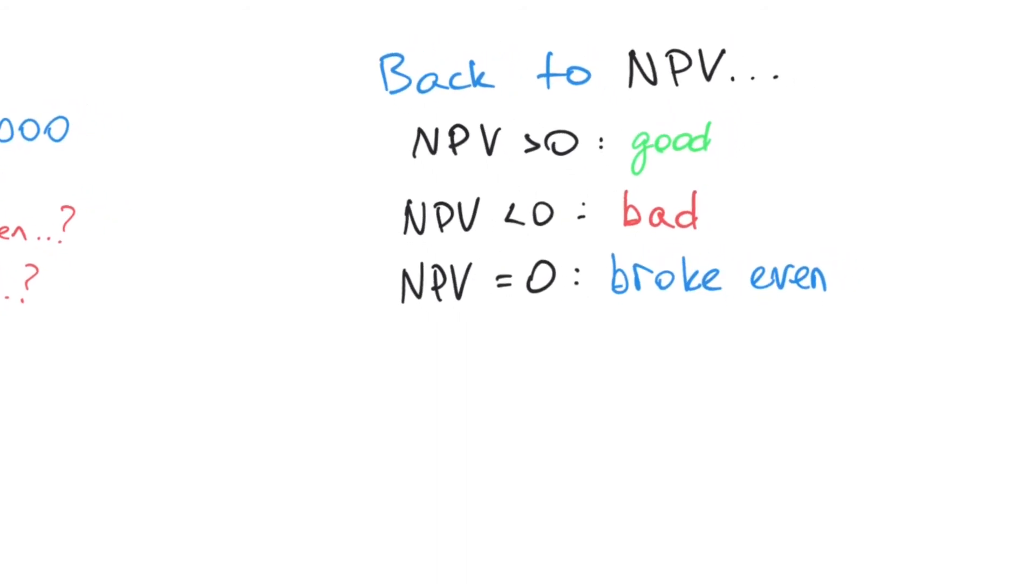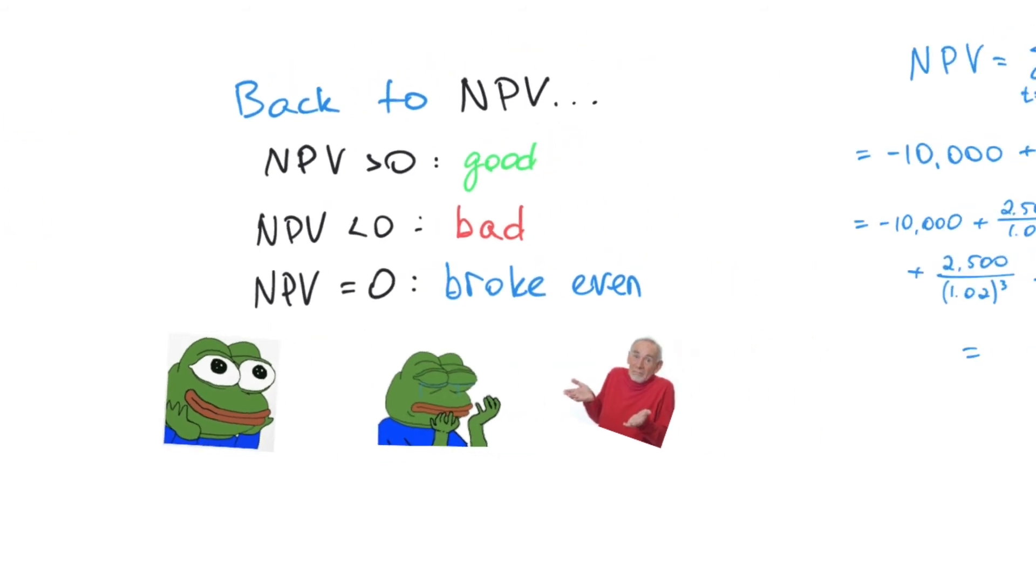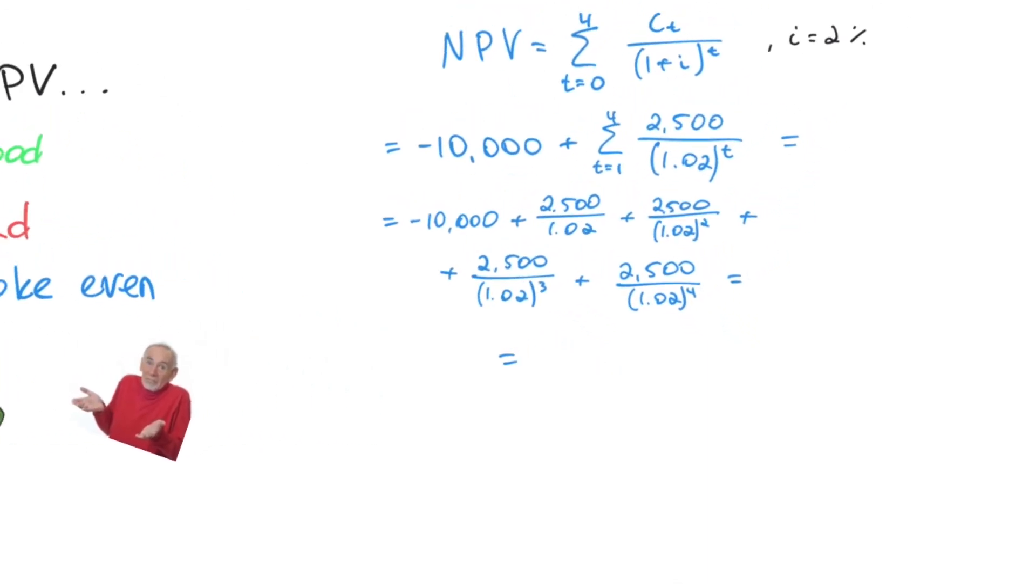Back to our NPV, net present value. If it's more than zero, that's good. That means in the long term we'll make money. If it's less than zero, obviously that's bad. We'll lose money. And in the rare case that it equals zero, that means we just broke even. We didn't make any money, we didn't lose any money. We're back to square one.